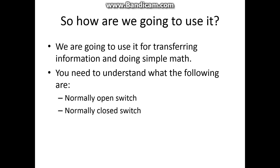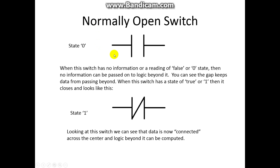What you really need to understand is something called a normally open switch and a normally closed switch. A normally open switch looks like this. You'll notice that I called this state zero — this is its normal state. No information can get through this gap. However, when we press a button or when some action is taken, there is a connection made and that state switches to state one, and it looks like this.